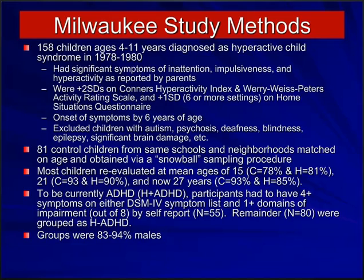We evaluated these children again at age 15, age 21, and age 27. The results I'll be discussing here are primarily from the age 21 and 27 follow-ups. We had very high retention rates for both control and hyperactive samples, so the majority of individuals who began the study participated at these follow-up points. At adulthood — age 27 — ADHD was defined by modified DSM-IV criteria.